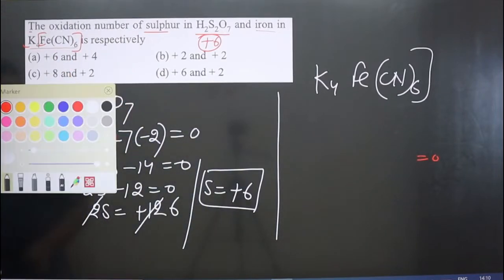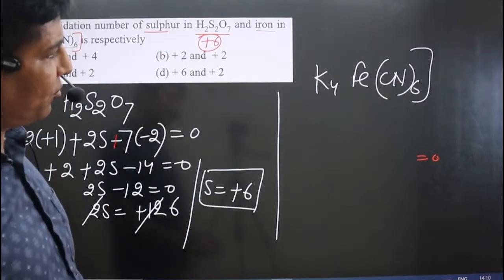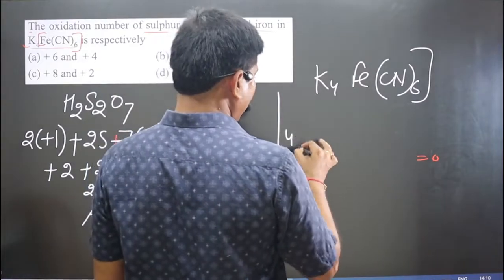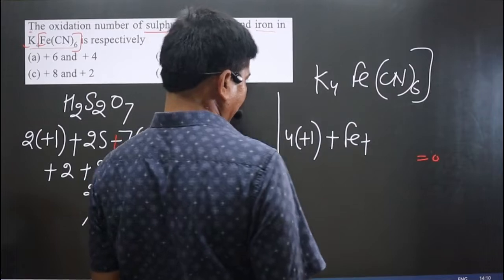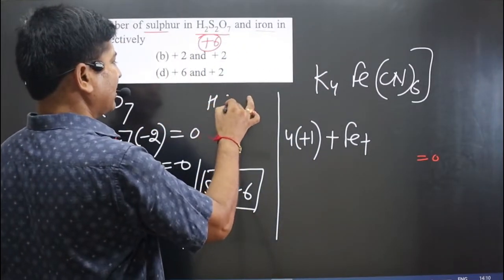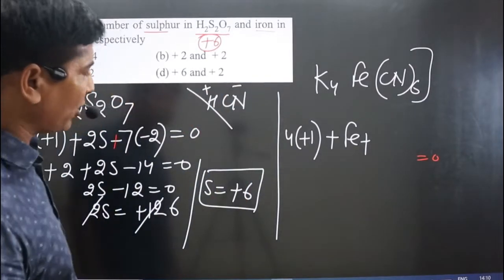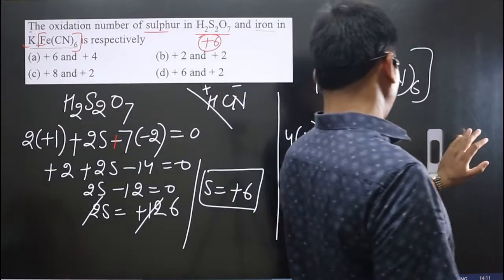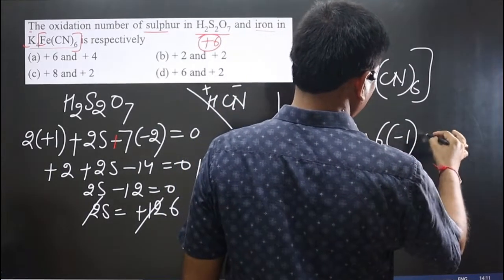For a neutral complex, the total oxidation number of all elements and molecules will always equal zero. There are four potassium atoms, each with oxidation number +1. Then Fe is there, for which we need to calculate the oxidation number. The CN group comes from HCN — if we remove one positive charge, CN carries one negative charge, so the cyano group has a −1 charge. There are six cyano groups with −1 charge each.